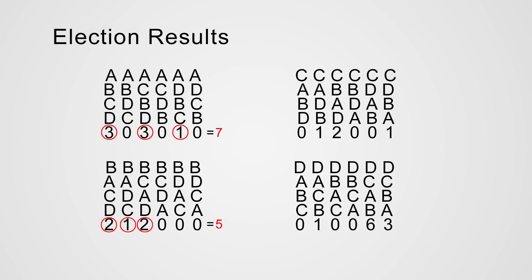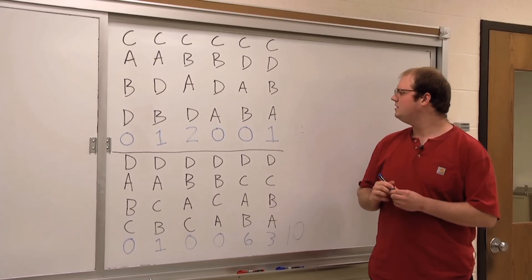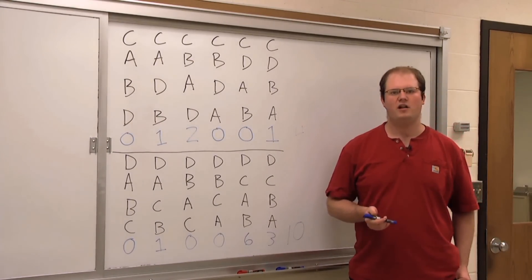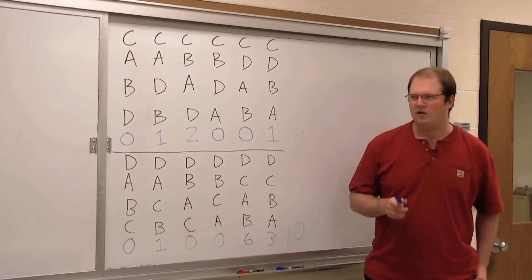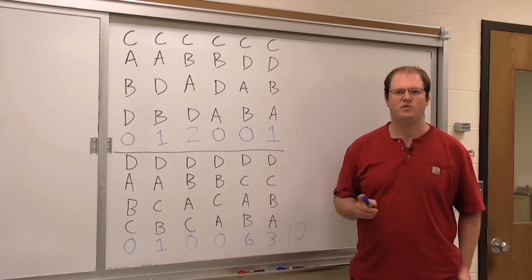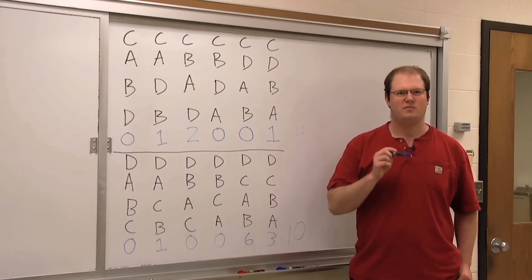Moving on to candidate C, we have one, two, and one, giving us four votes. For candidate D, we have one, six, and three, which gives ten votes overall. So altogether, A has seven, B has five, C has four, and D has ten. Using the plurality method, D has won the election. D received ten votes out of twenty-six total votes, so D has won with plurality but not with a majority. A majority means getting half or more of the total votes, which would be at least fourteen out of twenty-six.